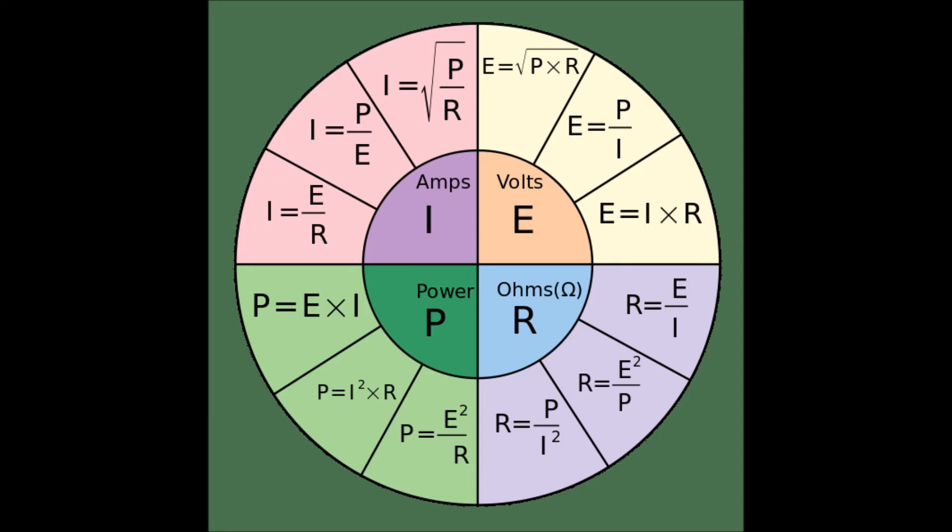Ohm's Law can help you solve for these four basic components of electricity: amperage, voltage, power, and resistance. Amperage is designated by the symbol I. Voltage is designated by the symbol E.